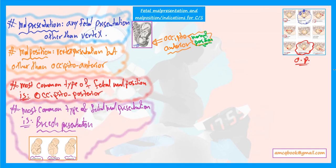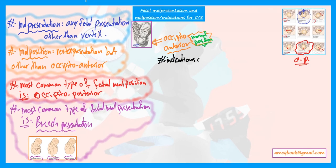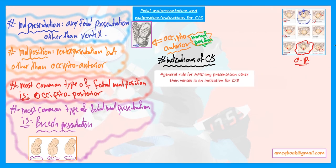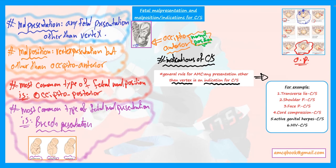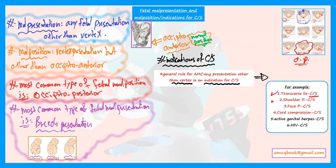Now, indications for caesarean section. A general rule for AMC exam: any presentation other than vertex presentation is an indication for caesarean section. For example, transverse lie means caesarean section, shoulder presentation means caesarean section, face presentation means caesarean section, and cord presentation or cord prolapse means caesarean section.